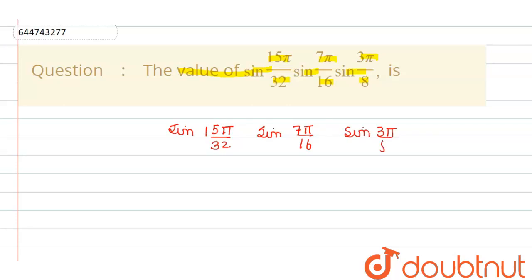So, to solve this type of question, first of all we will make a trigonometric formula so that it will become easy to evaluate this problem. In the first step, we will multiply and divide our term by cos(15π/32).